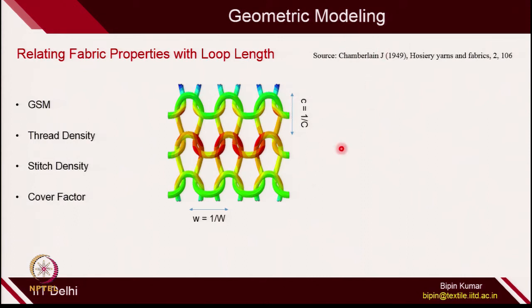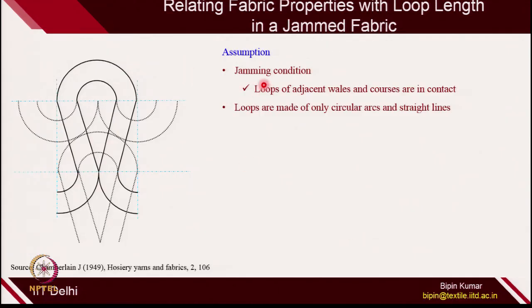Chamberlain, for proposing this model, defined some characteristics of the fabric and made certain assumptions before deriving these equations. One assumption was that once you take the fabric out of the machine, the fabric shrinks — usually so much that the loops of one column start touching the other column. On the bed, no needles are touching each other, but the moment you take out the fabric from the bed, they start touching each other.